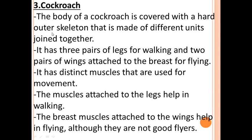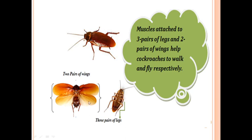The body of the cockroach is covered with a hard outer skeleton — an exoskeleton — made up of different units joined together. Cockroaches have distinct muscles used for movement: muscles attached to the legs help in walking, and muscles attached to the wings help in flying. However, they are not very good flyers and cannot fly very high. The muscles attached to the three pairs of legs and two pairs of wings help cockroaches walk and fly respectively.